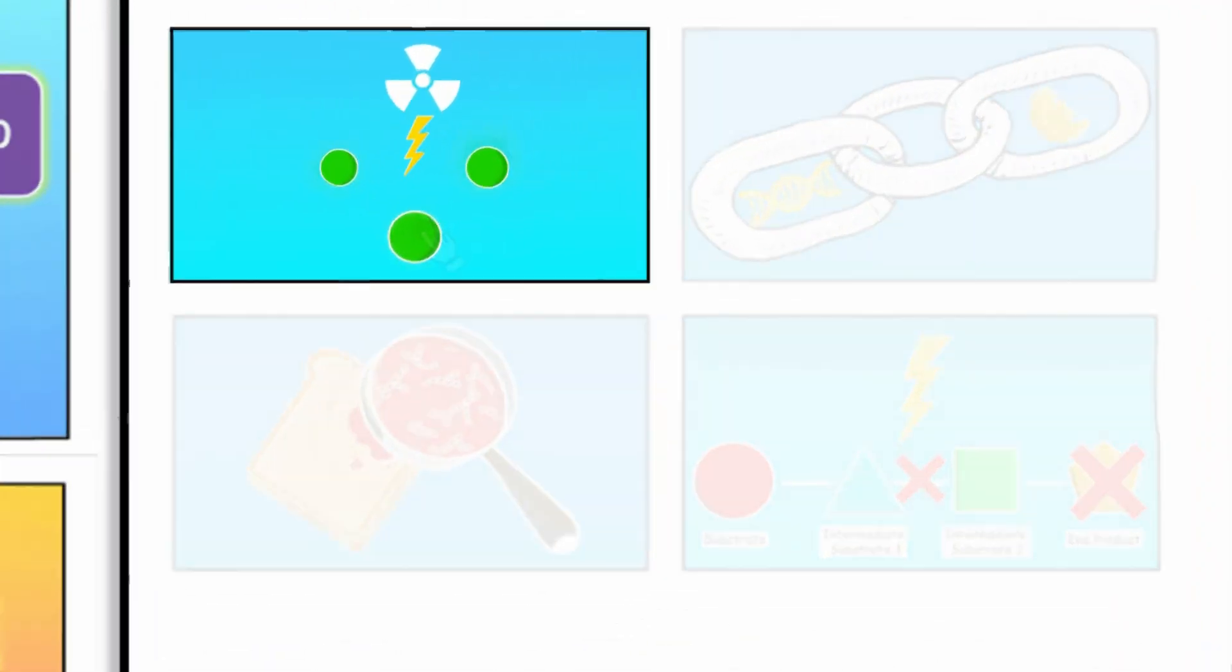This experiment not only confirmed the one-gene-one-enzyme hypothesis, but also introduced a method of making and selecting mutants that allowed scientists to use genetics and molecular biology to study a variety of biological processes.